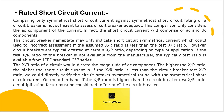However, circuit breakers are typically tested at a certain X by R ratio depending on the type of application. If the test X by R ratio of the breaker is not available from the manufacturer, the typical test ratio is available from the IEEE standard C37 series. The X by R ratio of a circuit dictates the magnitude of the DC component — the higher the X by R ratio, the higher the short circuit current. If the X by R ratio is less than the circuit breaker test X by R ratio, we could directly verify the circuit breaker symmetrical rating with the symmetrical short circuit current.